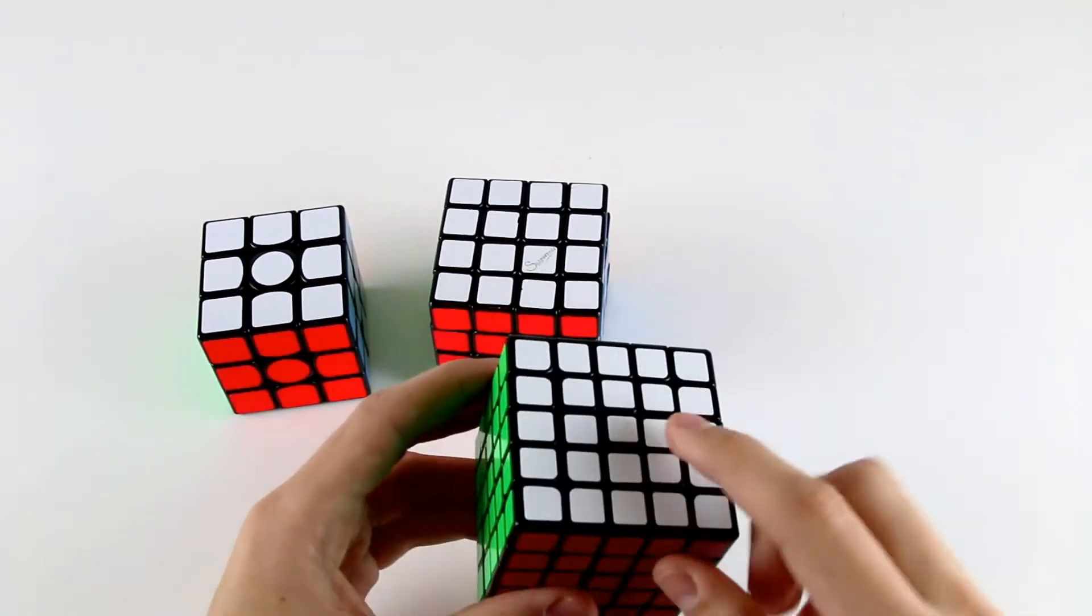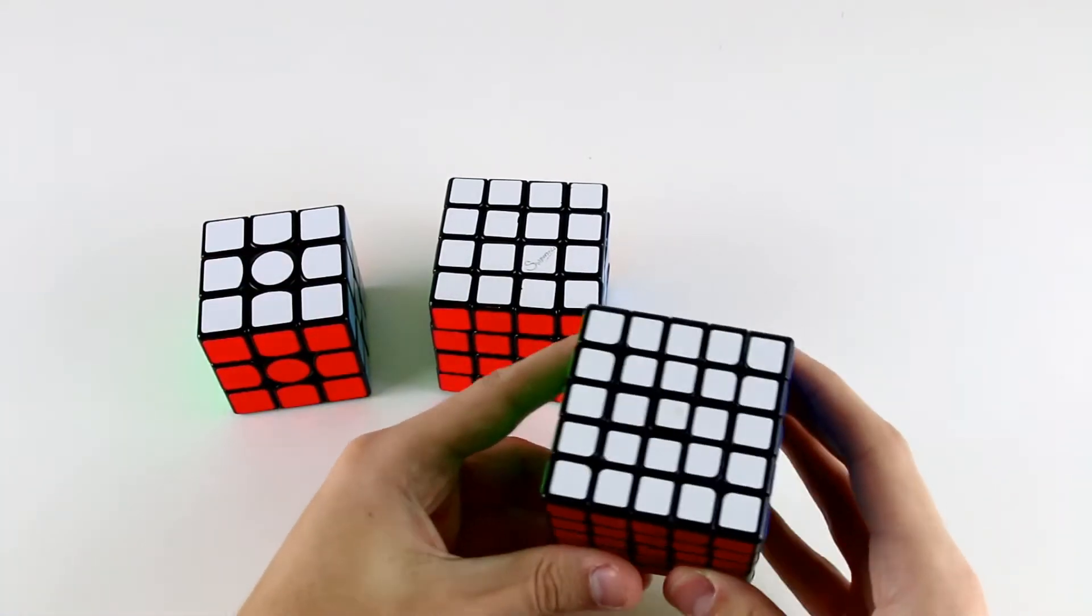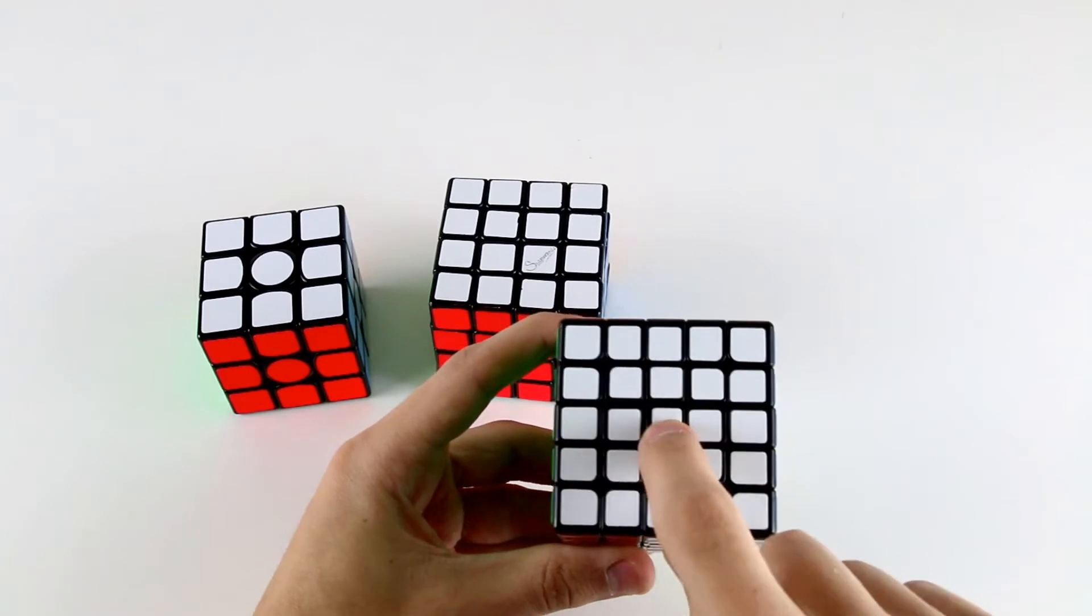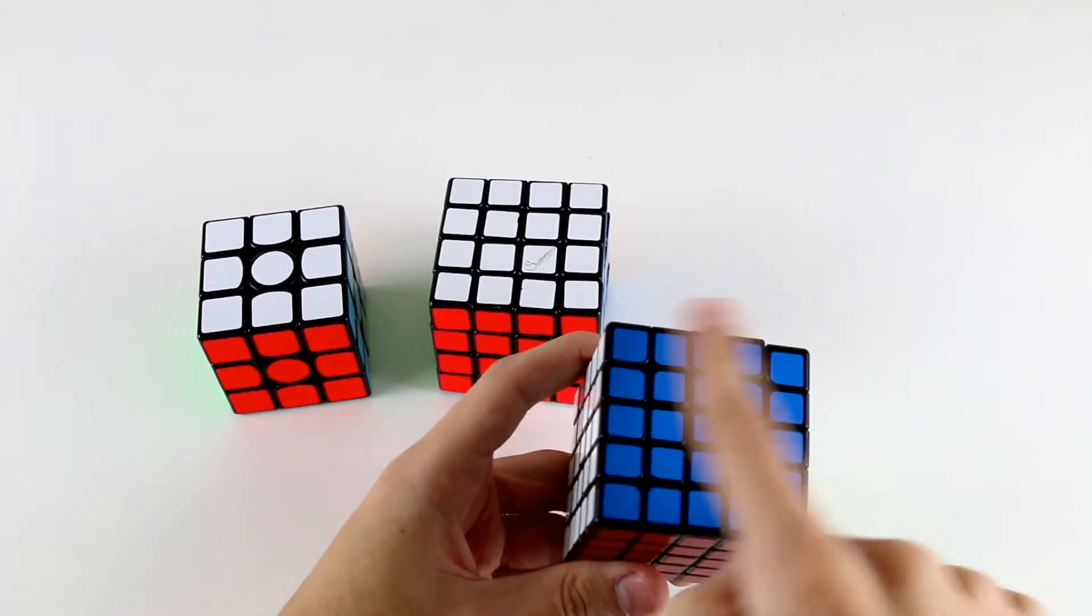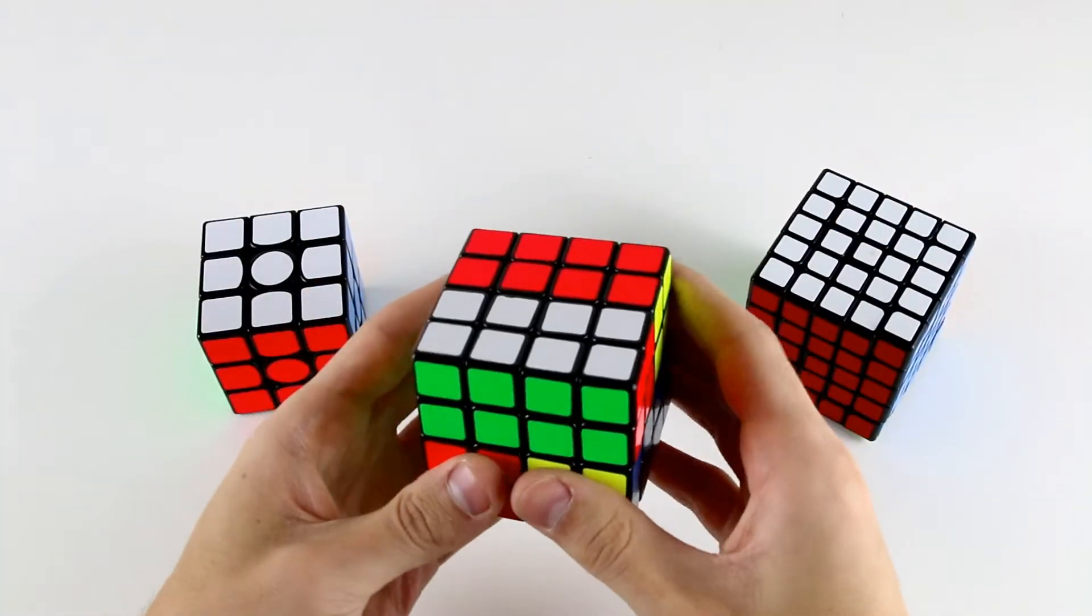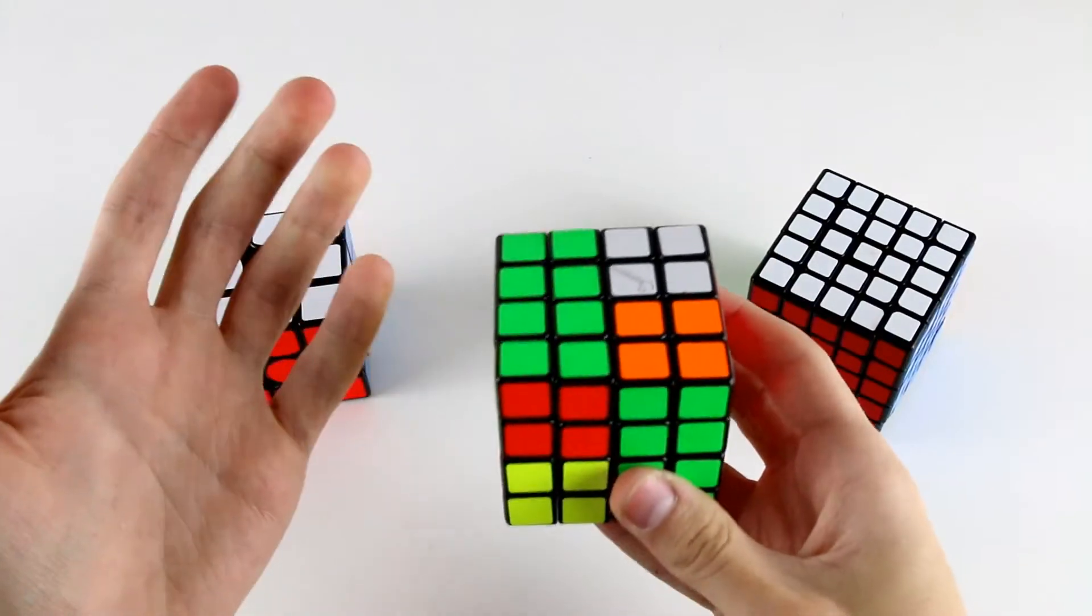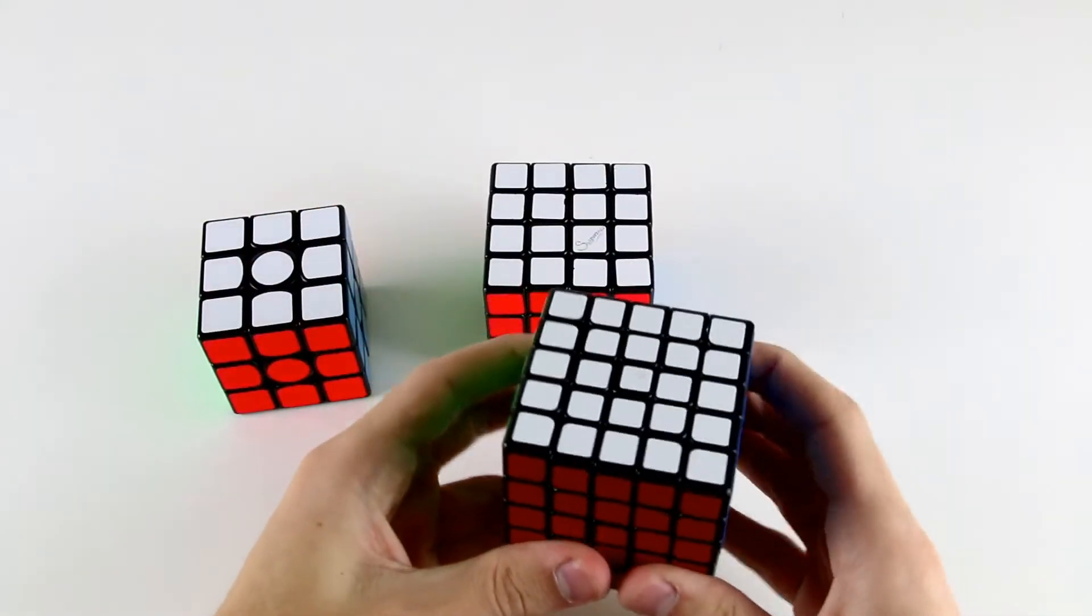Unlike a 4x4 cube, the 5x5 cube actually has fixed centers like a 3x3. If we look at this cube, the middle sticker here, the white sticker, denotes the color of the side. Similarly, the blue sticker here denotes that this side will be blue, unlike on the 4x4 cube where there are no fixed center pieces.